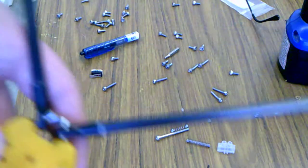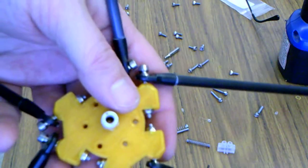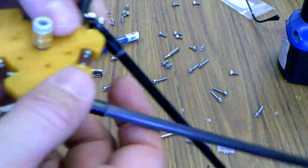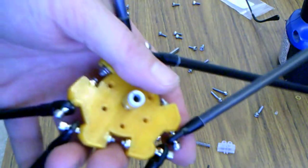Alright, so I've placed all the smooth rods on and we're going to move on to the auto level trigger.